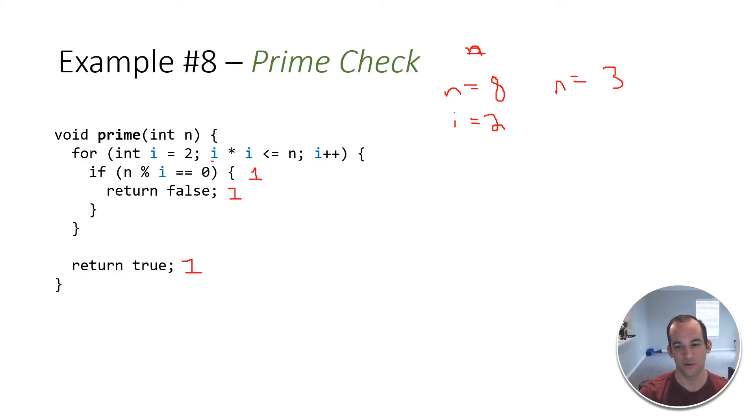We have this thing here where we're saying i times i is less than or equal to n. Well, what's i times i the same as? i times i is the same as i squared is less than or equal to n. Or we could say i is less than or equal to the square root of n. This means that this is actually big O of the square root of n.